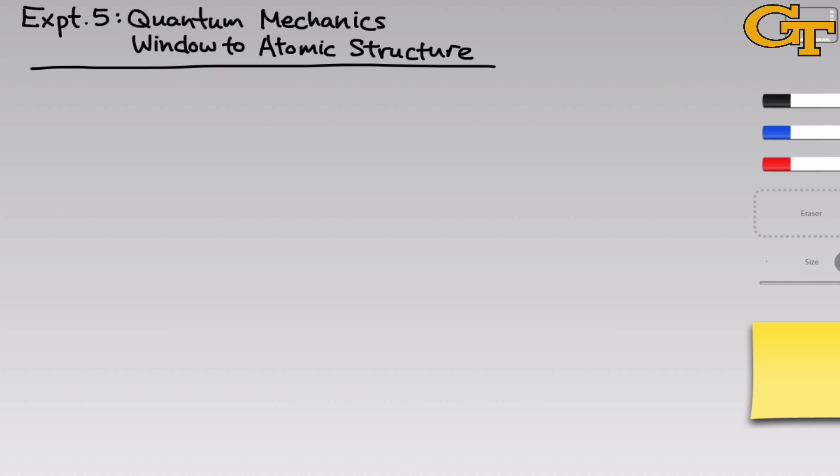In the first part of the experiment, we'll investigate the diffraction of laser light. Diffraction is a really interesting phenomenon that's particular to waves. To show you what diffraction looks like, imagine we take a laser pointer and send that laser light through a grating that has very small slits spaced at very tiny distances.